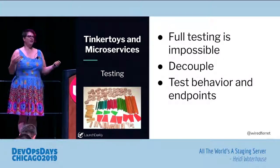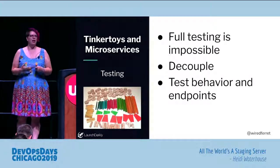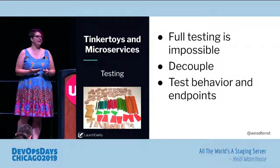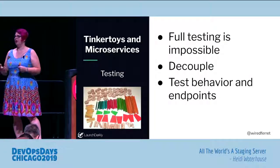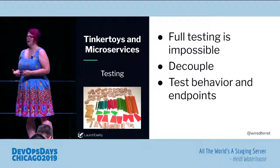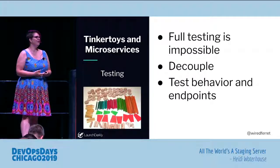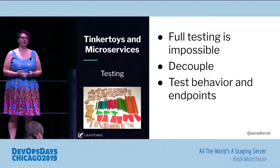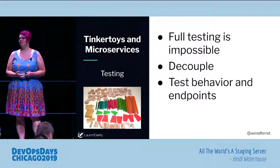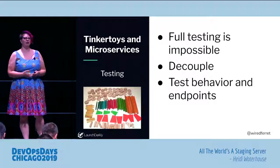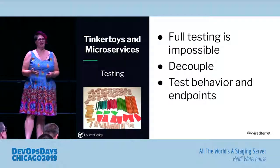The last thing for Tinker Toys and Microservices: because you can't test everything, you're just going to need to test endpoints, and behavior-driven development, and what the user experiences. Because, like Charity Majors said, nines don't matter if your users aren't happy. They don't. What we need to be testing is what our users experience, not what we think ought to happen.